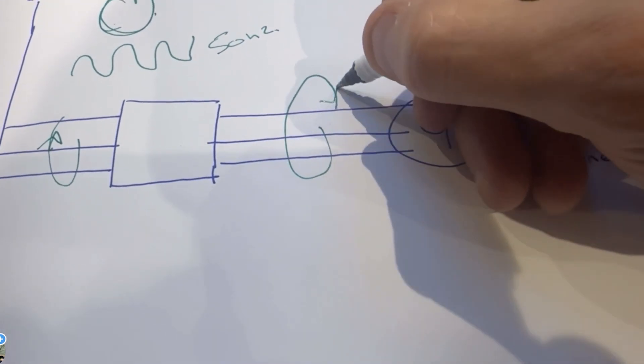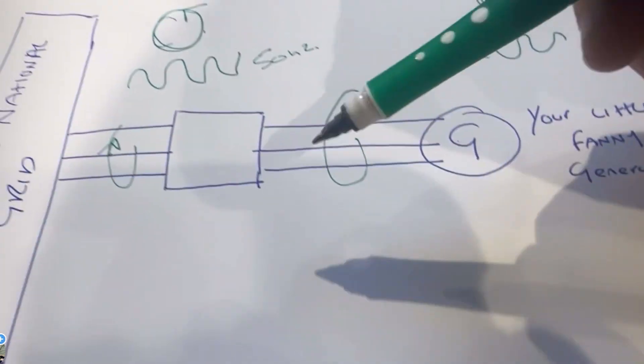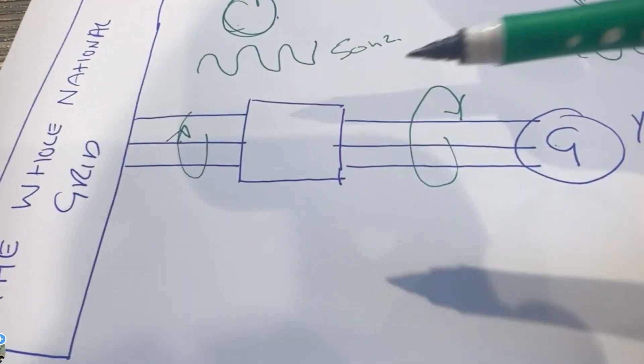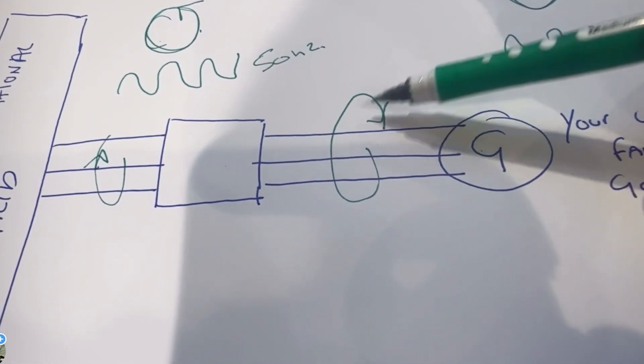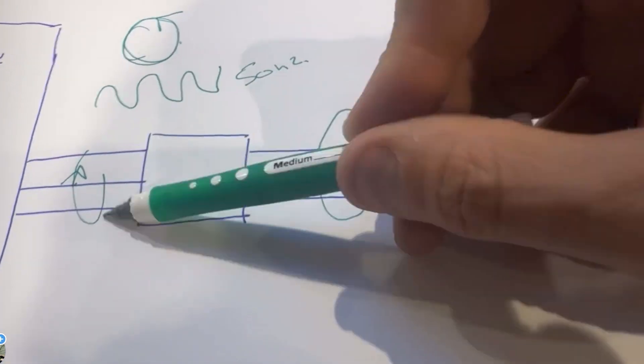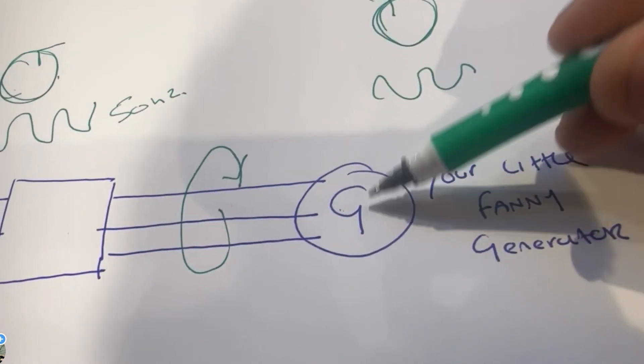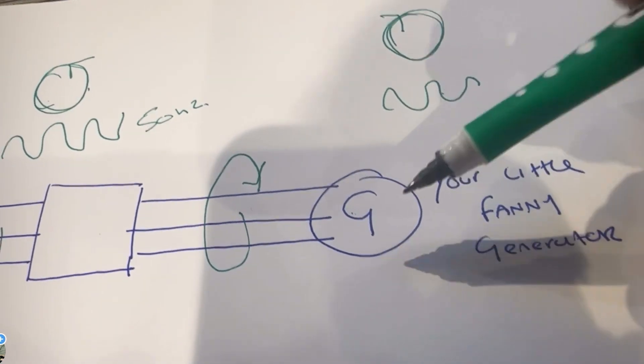When you're installing it you do what they call phasing out, so you make sure that it naturally goes in the same direction. You need to check that though as part of it. You do phasing out which is a thing you do on HV to make sure the phases go in the same direction like this.